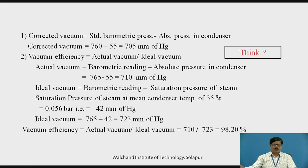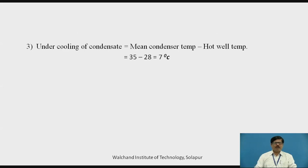Using the equation for vacuum efficiency as the ratio of actual vacuum to ideal vacuum, we put actual vacuum as 710 mmHg and ideal vacuum as 723 mmHg, giving us vacuum efficiency equal to 98.20%. Next, undercooling of condensate is the cooling of condensate below mean condenser temperature, given by mean condenser temperature minus hot well temperature, that is 35 minus 28, equal to 7 degrees Celsius.